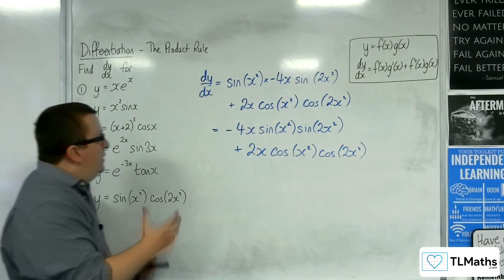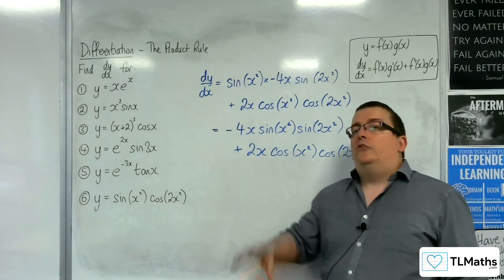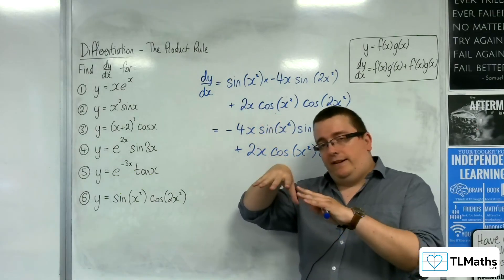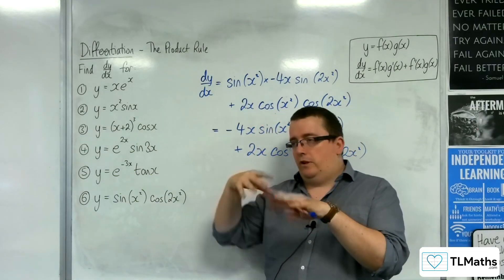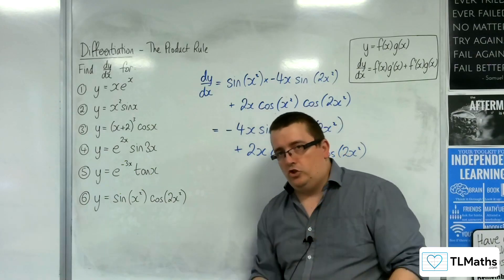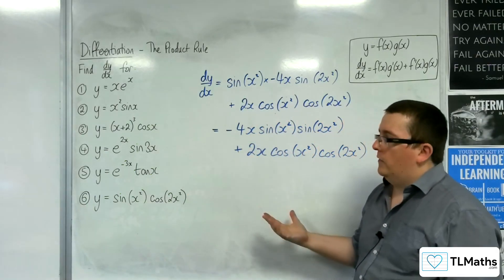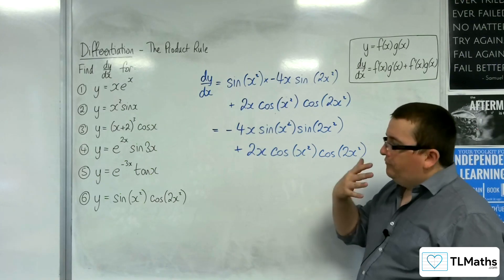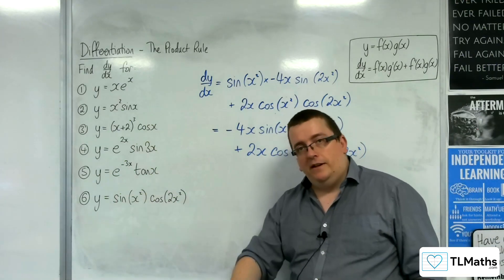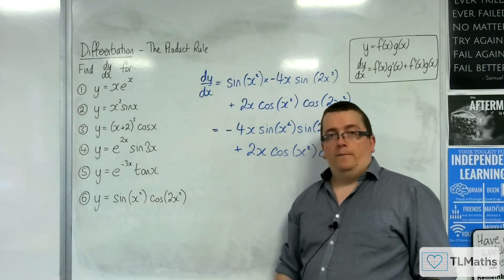So, that's how we can differentiate that last one, and that's how we can use the product rule. If you just get into the habit — you can write it out in more detail going: this is f of x, this is f prime, this is g of x, this is g prime, and then crossing. You can set it out that way. I've always remembered it as first times the derivative of the second, plus the second times the derivative of the first. And you shouldn't go wrong.